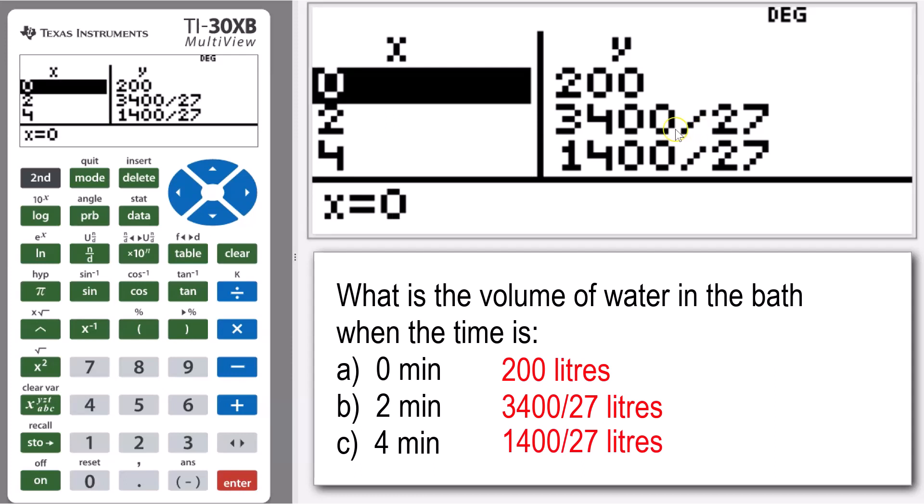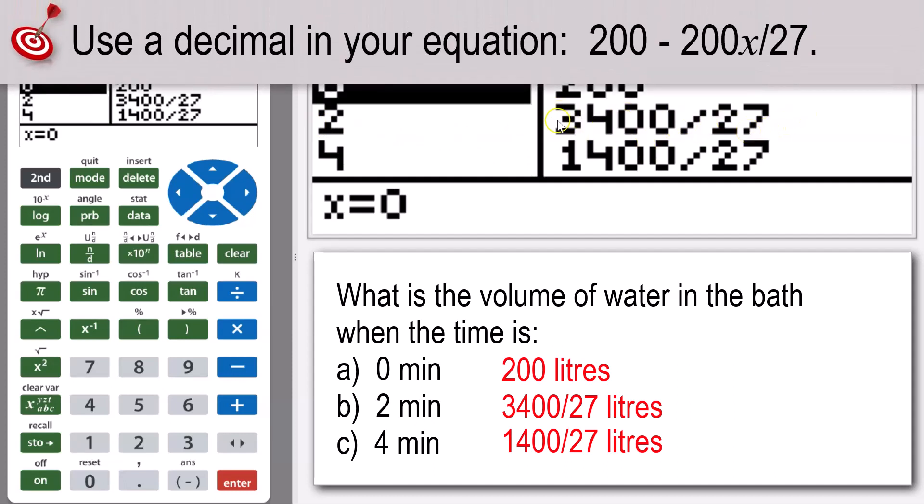Okay, now you might think for that time two minutes, 3400 over 27 doesn't really mean much as a fraction, so you might want to convert that to a decimal. Now there isn't any way to do this within the table, but if we just remember that value, we can quit out of the table here.